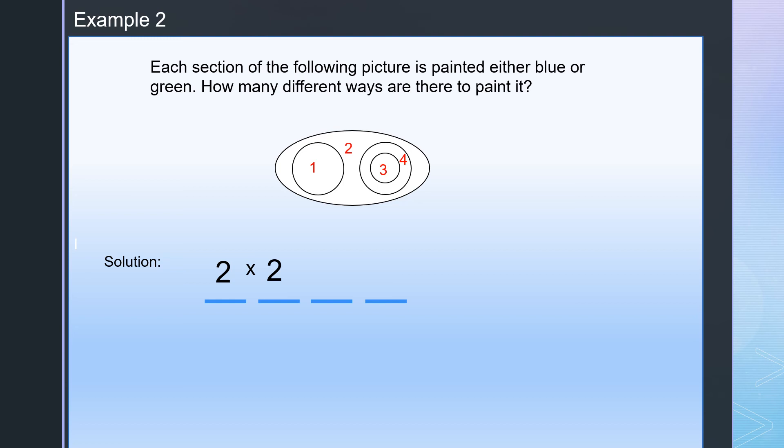Similarly, for the third region, we have 2 ways. So times, because these 2 ways will match all the 4 different ways in the previous 2 regions. For the fourth region, also 2 ways. So now we have 2 to the power of 4. That is 16.